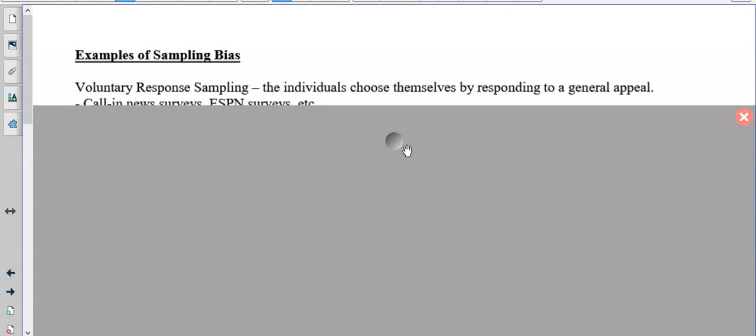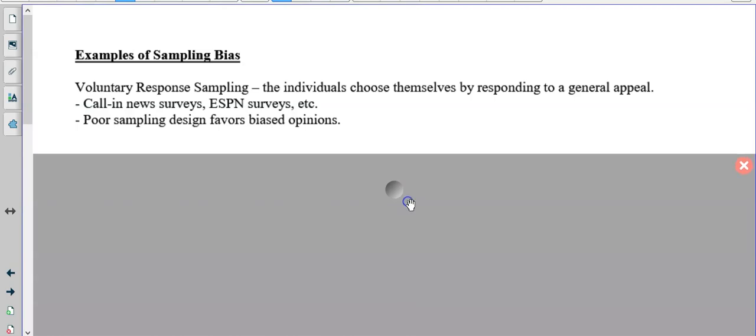So examples of sampling bias. A voluntary response sampling. So the individuals choose themselves by responding to a general appeal. So you're listening to the radio or watching the news and it says, hey, call in and give your opinion. Or like an ESPN survey. You're biased because you're already watching that program or listening to that program. Poor sampling design favors biased opinions. So depending on how they do these surveys, it could end up being very biased.